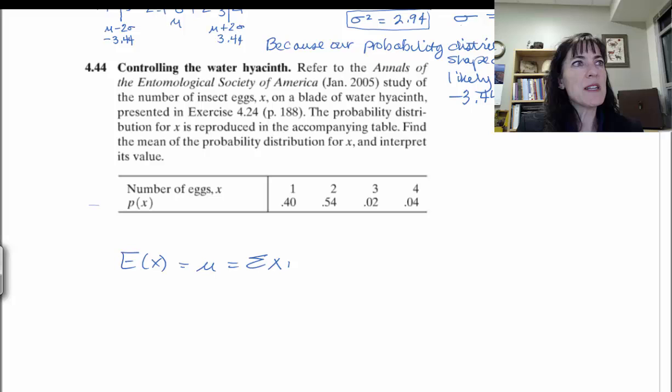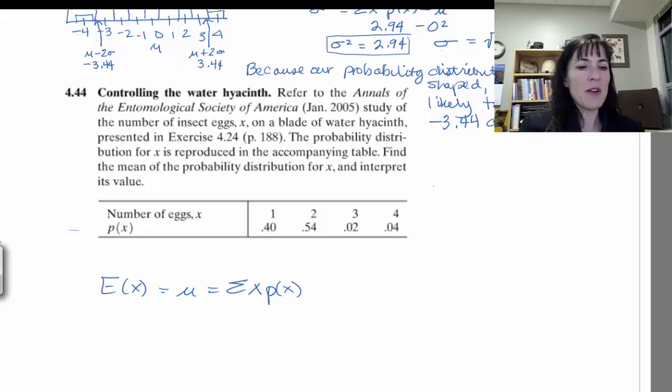So we have most of our table here. I can redraw it sideways because I like that. So I'll have x, and then I have p of x, and then I need x times p of x.